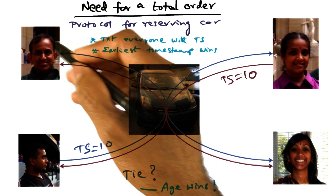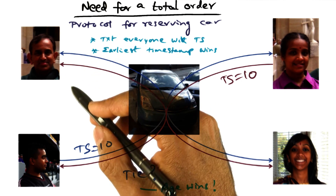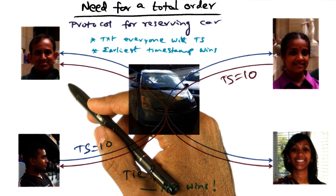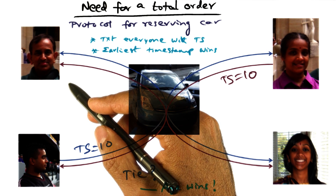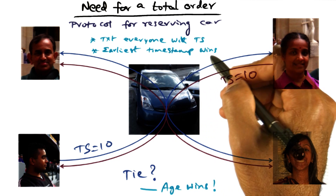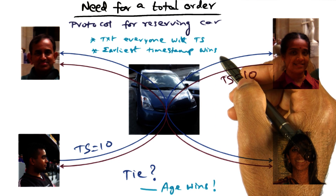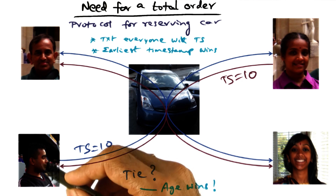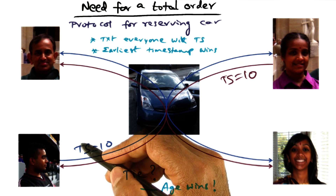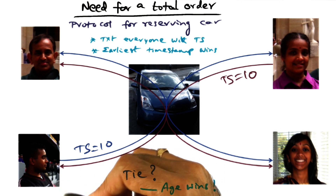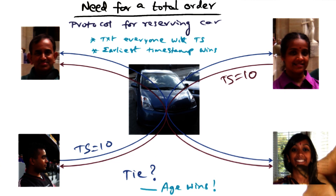How do we pick the winner? Locally, we can look at the timestamps of requests that have come in from others and our own requests, and whoever has the earliest timestamp wins. Everybody makes a local decision looking at the timestamps and says, right now it's my son's turn, or my daughter's turn to use the car, and so on.